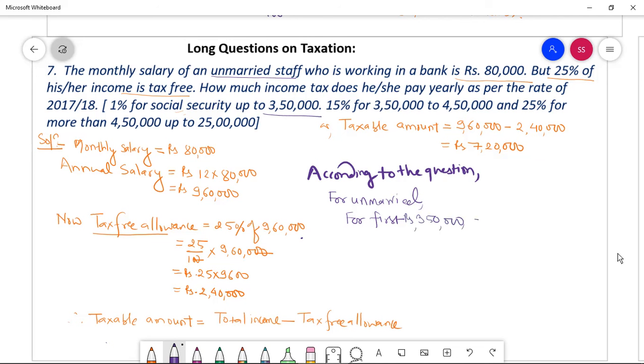one percent of 3,50,000, one by hundred into three lakhs fifty thousand. First step I believe you understand till now.